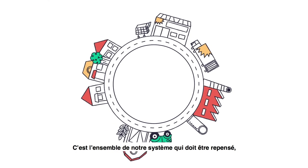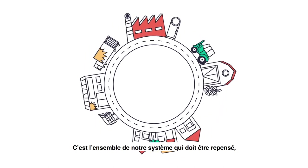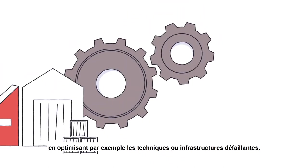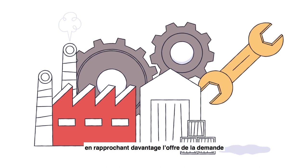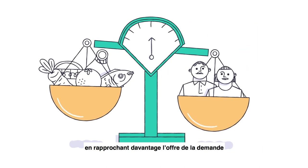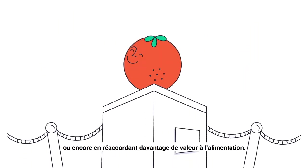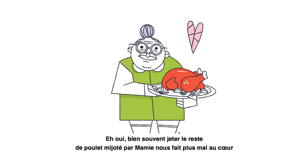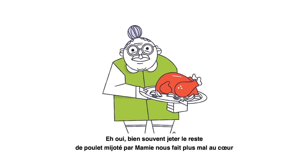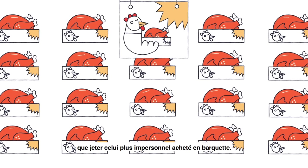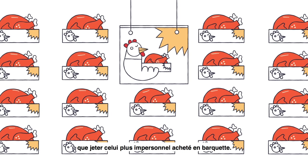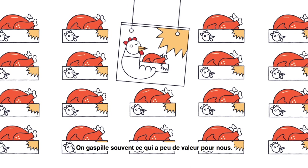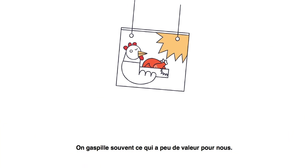However, there is still a long way to go. The whole system must be redesigned — for example, by optimizing poor infrastructure, bringing the supply closer to the demand, or even restoring value and meaning to our food. We often feel more heartbroken throwing away leftovers from a chicken cooked by our grandmother than throwing away an impersonal store-bought chicken wrapped in plastic. In fact, we often waste what is of little value to us.